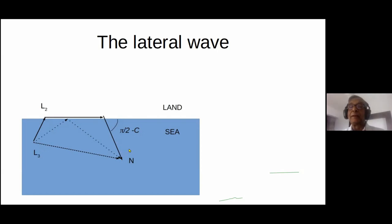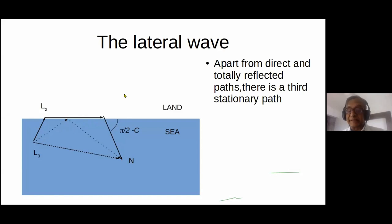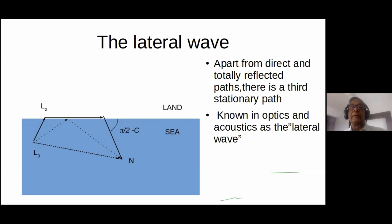Then you have this path where you go into the shore at the critical angle, run along the shore, and come back. Your optics textbooks don't tell you about a path like this — I learned about it only quite recently. You have these three stationary paths, and this particular one, which comes into the critical angle and then moves along the surface and comes back, is not very well known. You will find it in engineering books dealing with the propagation of electromagnetic waves, and it's there in acoustics. I first read about it in an acoustics book. It's known as the lateral wave. This is something interesting that comes out of Fermat's principle.